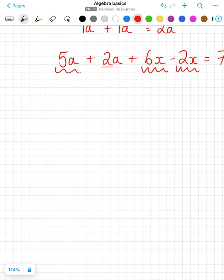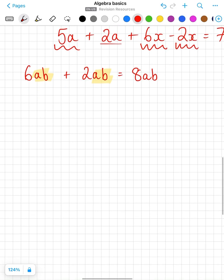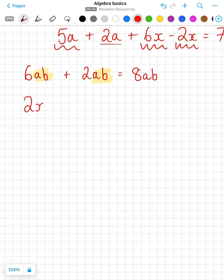Now like terms might not just be a single letter, we might have something like this: 6ab plus 2ab. These are still like terms. Instead of just being one particular letter, they're 2ab but they are like terms so we collect them exactly the same way.